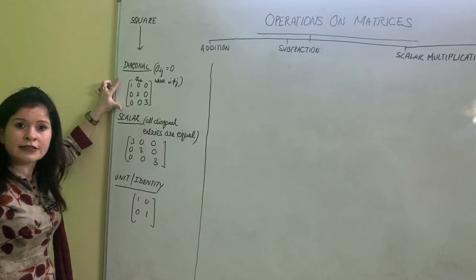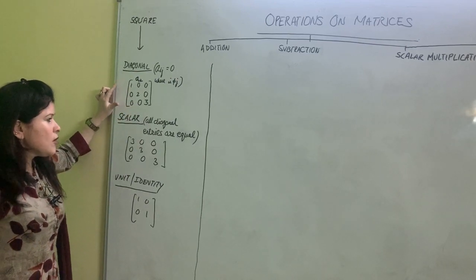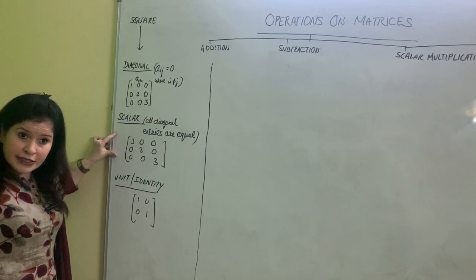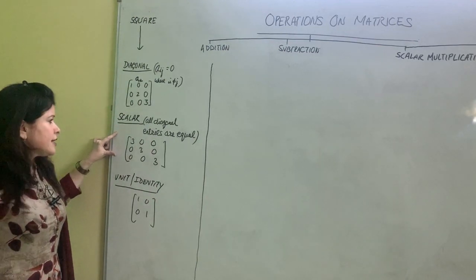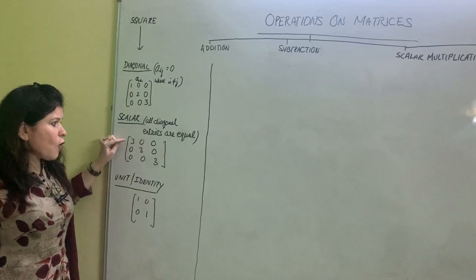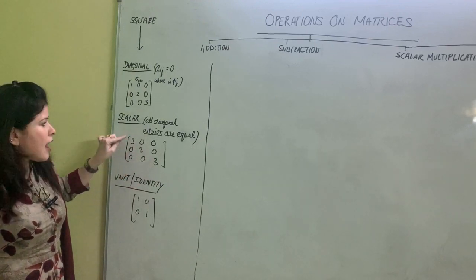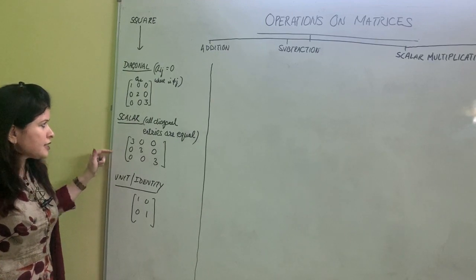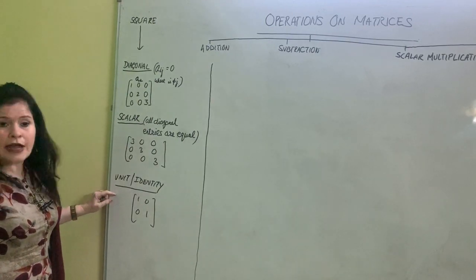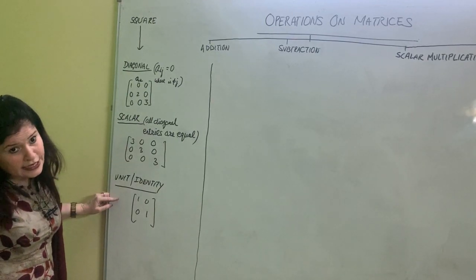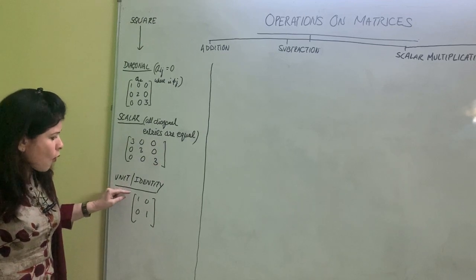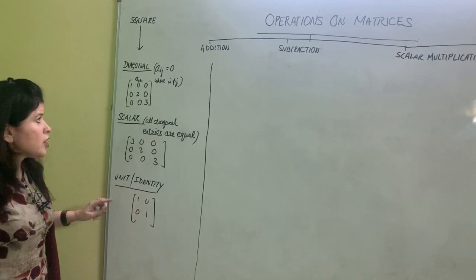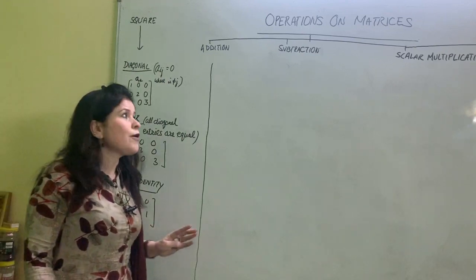This is the diagonal matrix. Further, a type of diagonal matrix is a scalar matrix, if all the diagonal entries are equal in value. And further, a type of scalar matrix is called an identity matrix, if all the diagonal entries are equal to one.